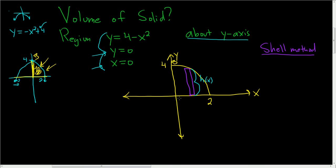And p of x is the distance between the skinny part and the axis. So h is just this function here, 4 minus x squared. So h of x is 4 minus x squared. And this distance here is simply x, so p of x is equal to x.